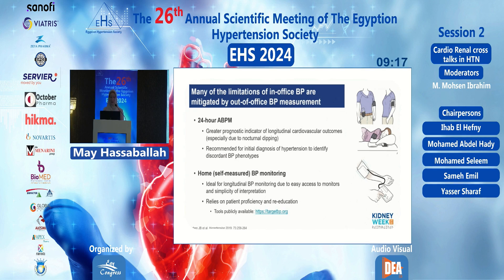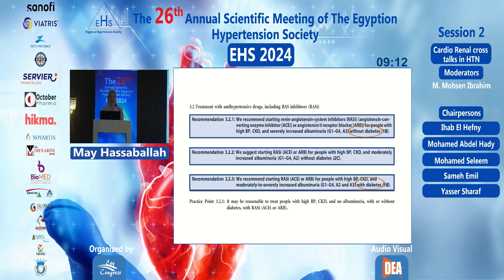Many limitations of in-office blood pressure measurement are mitigated by 24-hour ambulatory blood pressure monitoring and home self-monitoring. Regarding RAS blockade, the 2021 guidelines recommend starting angiotensin system inhibitors in patients with or without diabetes at CKD stages G1 to G4 with proteinuria A3 — more than 300 mg — rated 1B. In diabetics with proteinuria A2, it is also 1B; in non-diabetics it is rated 2C.